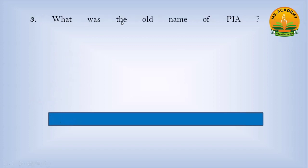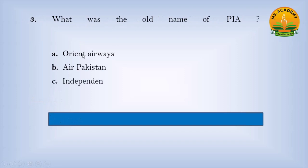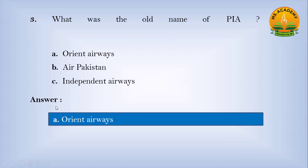What was the old name of PIA (Pakistan International Airline)? Option A, Orient Airways; Option B, Air Pakistan; Option C, Independent Airways. Answer: A — Orient Airways.